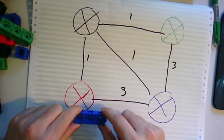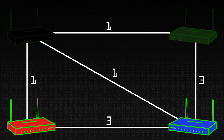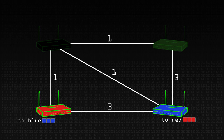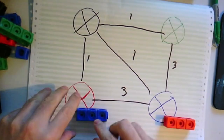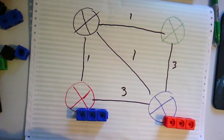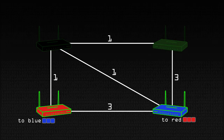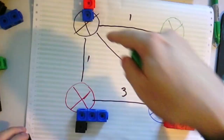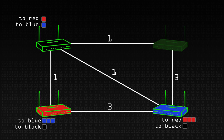Let's imagine we switch on red and blue first. They can see each other and they know that the cost between them is three. These blocks represent the distance it's going to take that router to get to the other router. So red can see blue at a cost of three, and blue can see red at a cost of three. These blocks are the routing table. Now let's switch on black for the first time. Black can see red at cost one, blue at cost one, and nothing else because we haven't switched on green yet. So now blue can see black, and red can see black - they've been added to the routing tables.